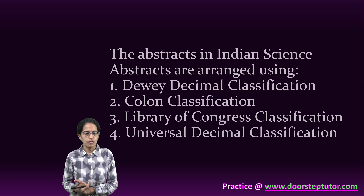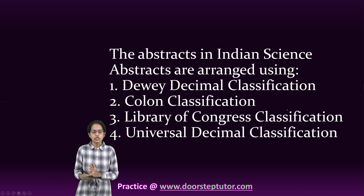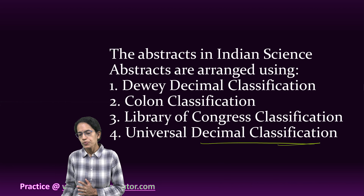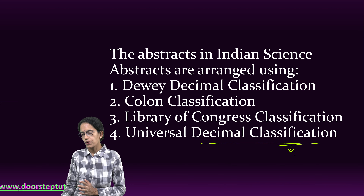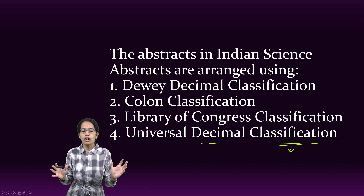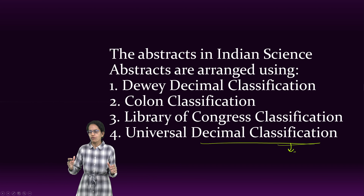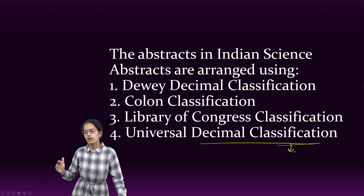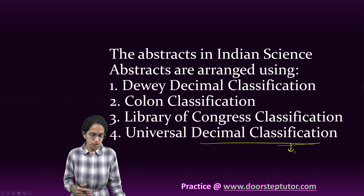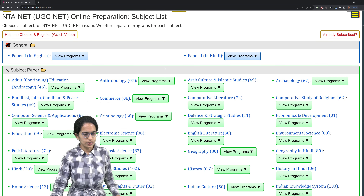The abstracts in Indian Science Abstracts are arranged as per the Universal Decimal Classification. This classification is important because when you have a large volume of content, UDC offers a hierarchical organization for indexing and retrieval, making it very useful for comprehensive understanding of the subject literature.